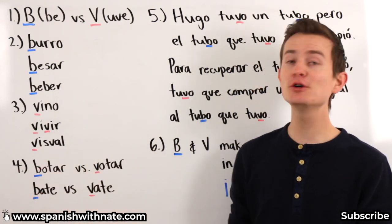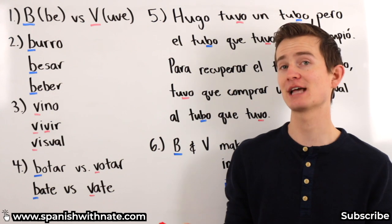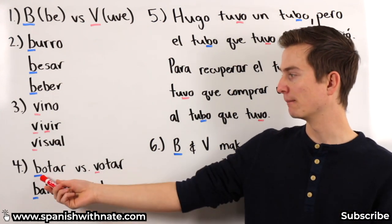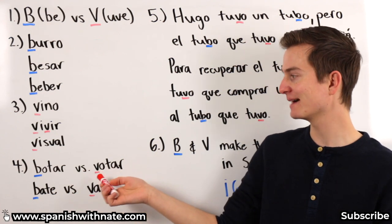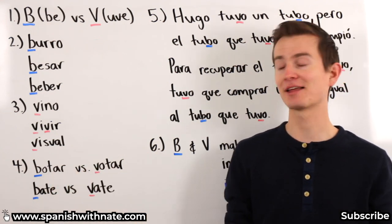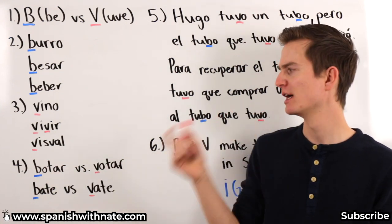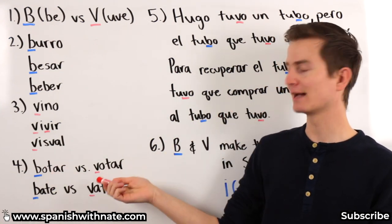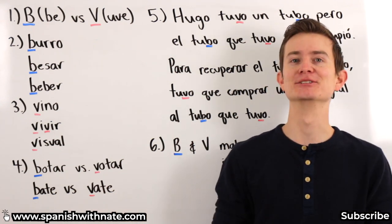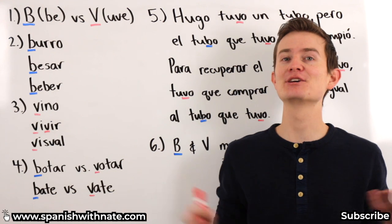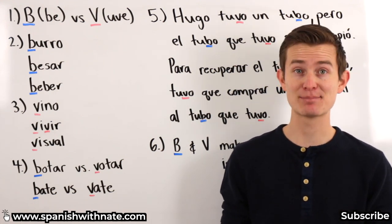We have a few words in the Spanish language that are spelled pretty much exactly the same, except botar — one with a B and one with a V. But other than that, everything's exactly the same. So how do we tell, when we're listening to Spanish, the difference between botar and votar? Because they sound exactly the same. Context clues.